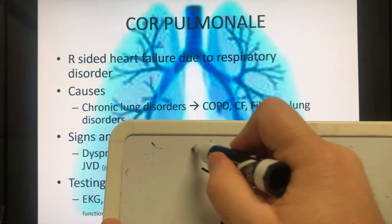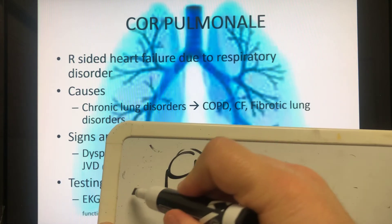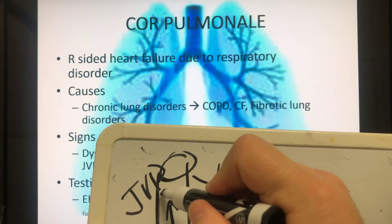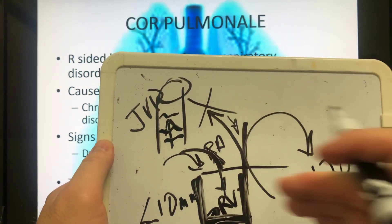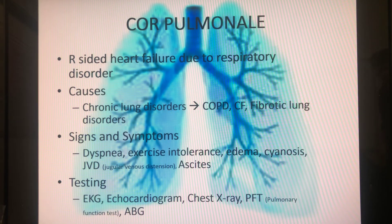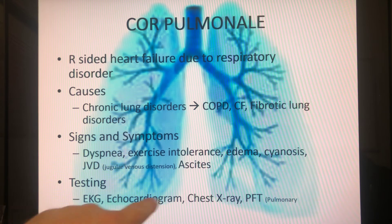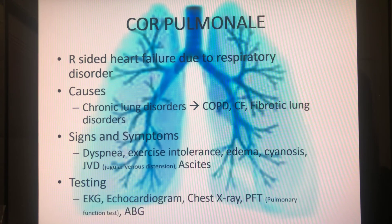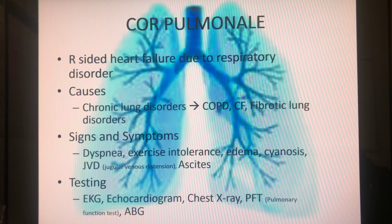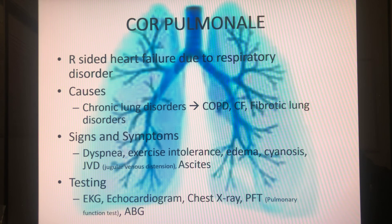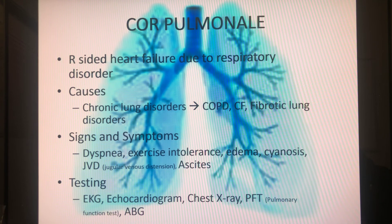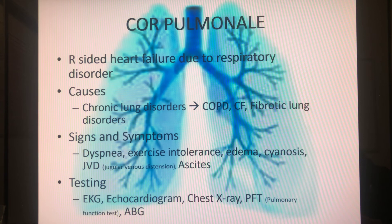With chronic cor pulmonale leading to right-sided heart failure, you can see the effects of backflow in the jugular vein — jugular vein distension — as blood trying to return to the right heart can't move forward against the elevated back pressure. You can actually see this in someone's neck. Ascites also occurs for similar reasons: blood backs up into the venous system, pools in the portal veins, and fluid accumulates in the peritoneal space of the abdominal cavity.